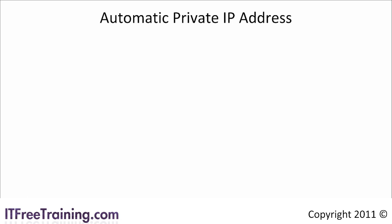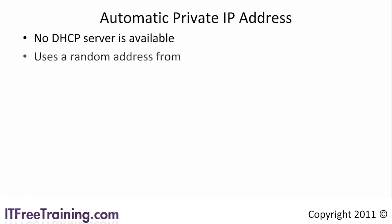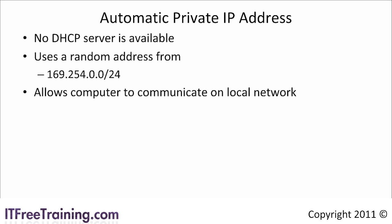The automatic private IP address system is used by Windows when it cannot contact a DHCP server to get an IP address. When this occurs, Windows will allocate a random IP address from the network 169.254.0.0. This allows the computer to communicate on a local network. If you decide to use private address ranges on your network, bear in mind that you should avoid using this range, otherwise you may get some unexpected results. Look out for IP addresses in this range when troubleshooting — if you get an address in this range, it means the computer is having trouble accessing the DHCP server.